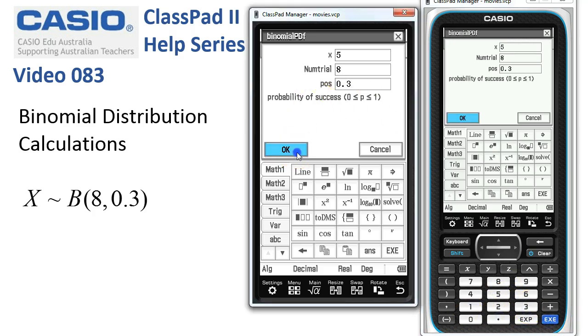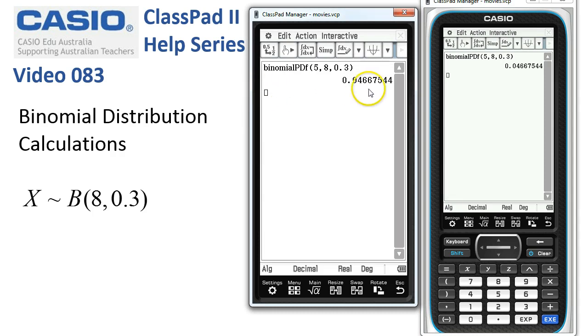So when I tap execute or OK here, the probability is just over 4% there. So not that likely it would seem.